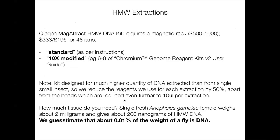Now I'm going to tell you about high molecular weight extractions. We've tried a variety of different approaches, and the one that's worked best for us is the Qiagen MagAttract high molecular weight DNA kit. It requires an investment upfront because it needs a magnetic rack, which is not cheap. But once you've got it up and running, it's pretty easy. There are two versions of this MagAttract kit: the standard version, which follows the kit instructions exactly, and the 10X modified version, which makes a slight modification to try to get higher molecular weight molecules.